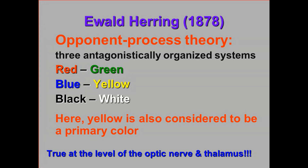And finally, there are units in the visual system that are excited by black and inhibited by white, or excited by white and inhibited by black. Black and white are not considered to be colors. Instead, black is the absence of color, while white is the presence of all colors.